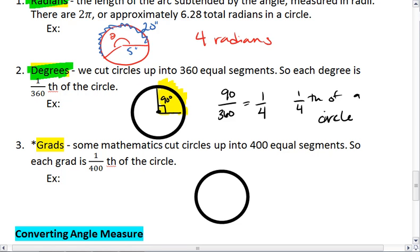Meaning if I had, let's say, 150 grads out of a possible 400, well, 150 out of 400 is going to reduce down to, let's see, we're going to get about 3/8ths of a circle.